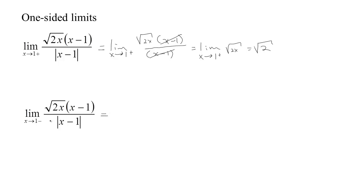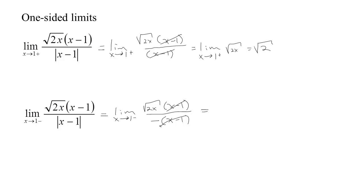If x is approaching 1 from the low side — x is always a little less than 1 — then x minus 1 will be negative. The absolute value of x minus 1 would then be the opposite of x minus 1, meaning we get an extra negative sign. So the x minus 1's cancel and we have the square root of 2x divided by negative 1. That gives us the limit as x tends to 1 from below of negative square root of 2x, which equals negative square root of 2. Considering left and right-hand limits lets us simplify absolute value expressions.